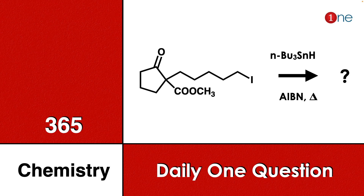Welcome to One Chemistry. This is the 365 Chemistry series — one daily question for you. Here you have cyclopentanone with a side chain; you have a halide and an ester. You are reacting with tributyltin hydride (Bu₃SnH) and AIBN. You have to find what will be the final product.